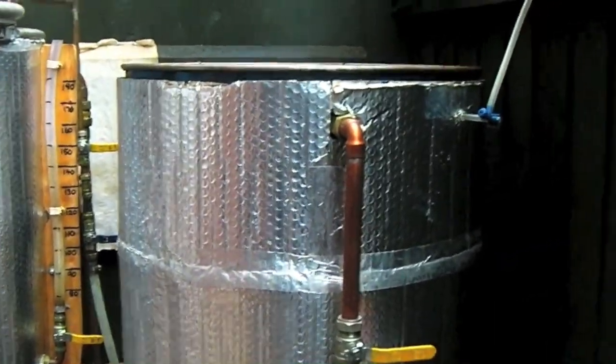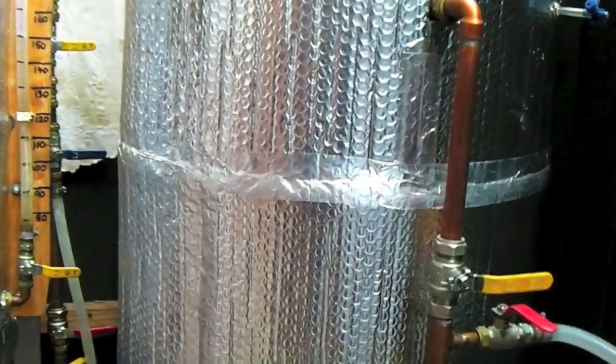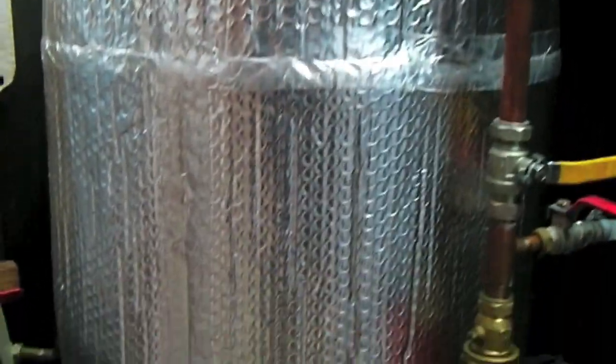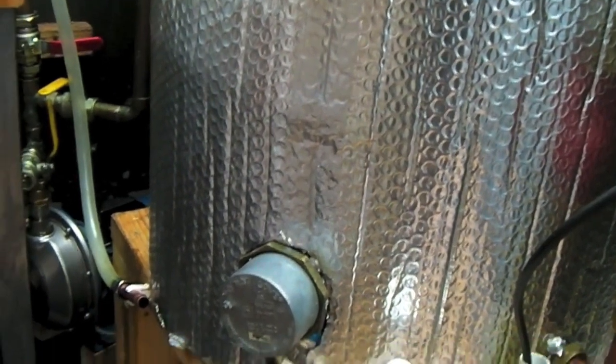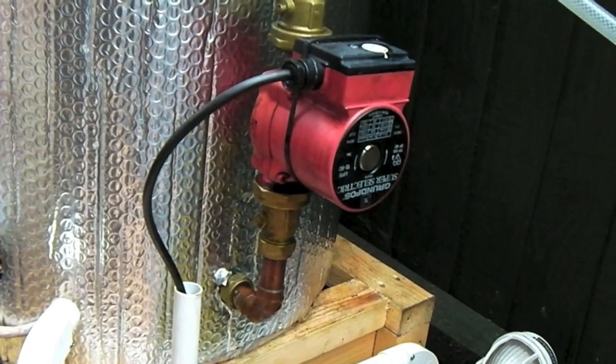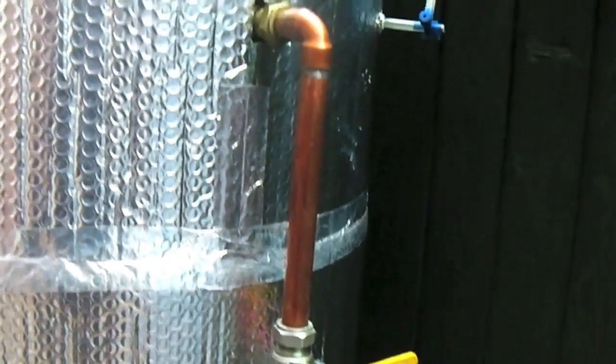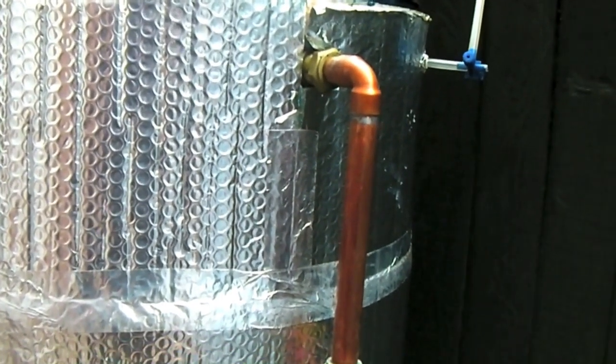Here we have a 200 litre wash tank. The main components within it are the 3 kilowatt heater, pipework leading from the bottom through a central heating pump back in through the top for circulation of the fluid.